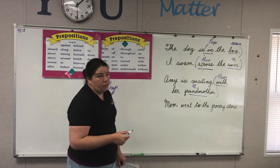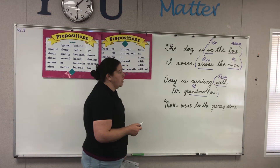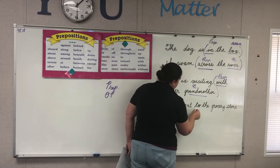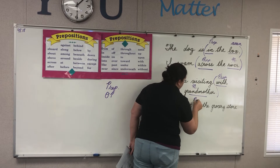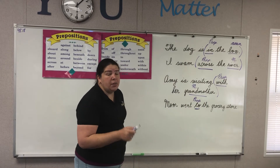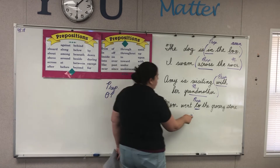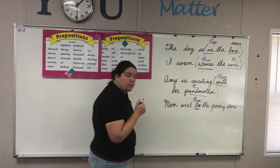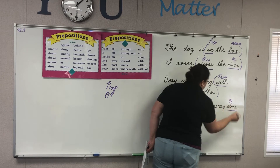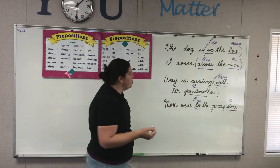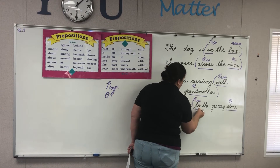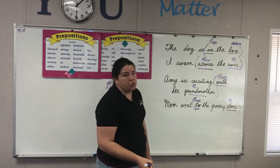'Mom went to the grocery store.' Where's the preposition? To. She went to. And where's the noun that comes after the preposition? To the grocery store — your noun would be 'store.' Now you might say to yourself, but there are two words in between. That's correct. The two words in between are also part of your prepositional phrase.